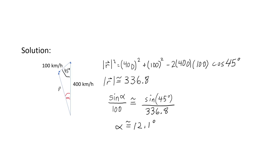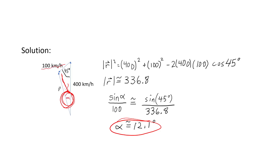We can also use the sine law to determine the angle. We're going to look at the resultant vector and form an angle at that resultant's tail. Using the sine law, we determine that alpha is roughly 12.1 degrees. We can use the sine law here without fear of the ambiguous case, because we know the angle must be acute — this side is not the longest side, so the angle across it cannot be the biggest angle.